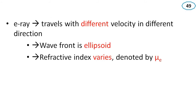Now consider the case of the E-ray. The E-ray travels with different velocity in different directions in the same crystal. Because the velocity varies, the wavefront is not spherical — it will be an ellipsoid. Since velocity varies, the refractive index also varies, and it is denoted by mu-E.